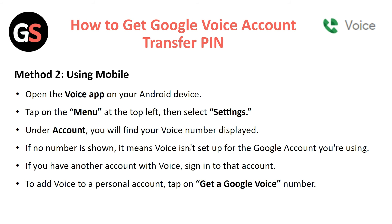For the second method, open the Voice app on your Android device, then tap the menu at the top left and select Settings. Under Account you will find your Voice main number displayed. If no number is shown, it means Voice is not set up for the Google account you are using. If you have another account, sign into that account, then tap Get a Google Voice Number.